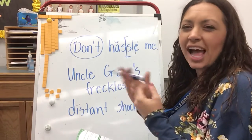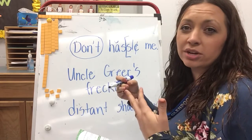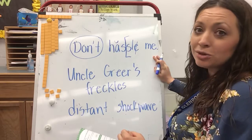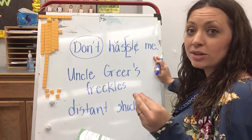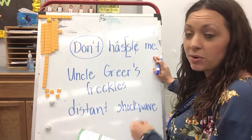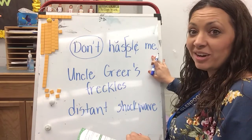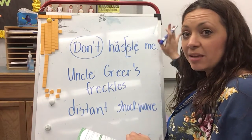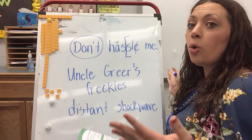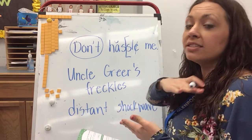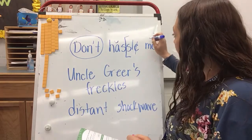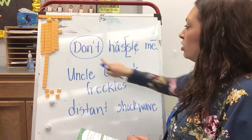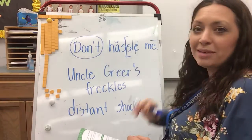Do you guys know what 'hassle' means? Hassle means when you're like bugging somebody over and over again — that's called hassling. So 'don't hassle.' You guys just know this word, but we're going to go ahead and code it so we understand why it does what it does. What's my vowel in that word? It's E. It doesn't have anything behind it, so it's open, so that vowel is going to be long. I'm going to add a macron, so M-E: 'me.' So 'don't hassle me.'